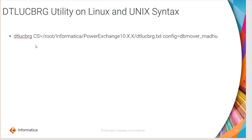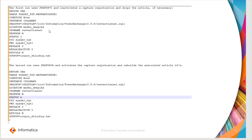The utility syntax is: utility name followed by CS, which includes the location of the parameter input file, and config is the custom DBMOVER name. For example, the first run uses status I, which creates a registration with inactive status, and status A creates a registration with active status.